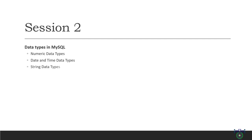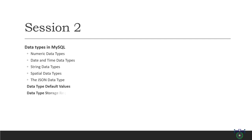First, we will discuss numerical data types such as integer, float, double, and decimal, which are used to store numeric values. Next, we will move on to date and time data types like date, time, datetime, and timestamp, which are used to store date and time values.